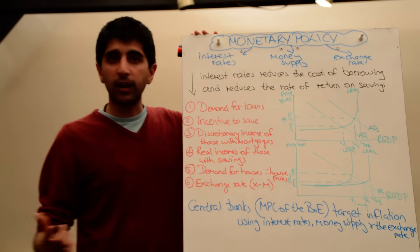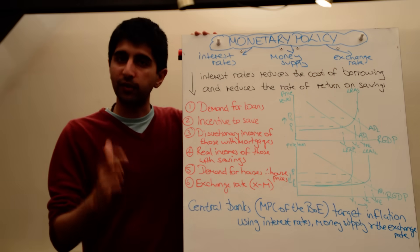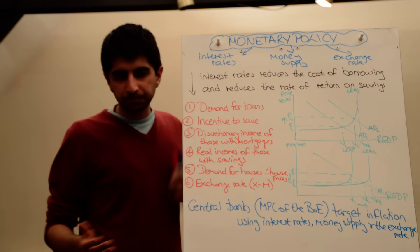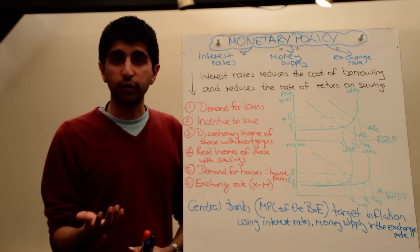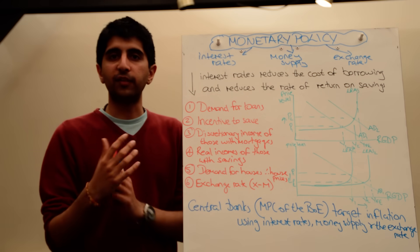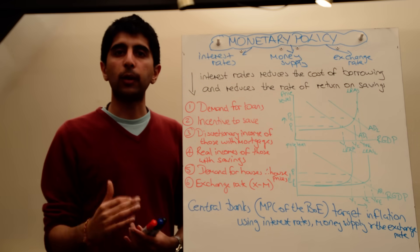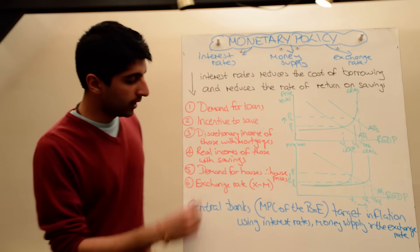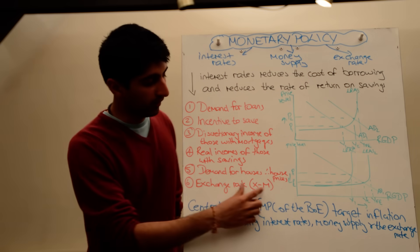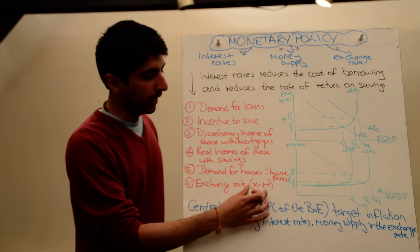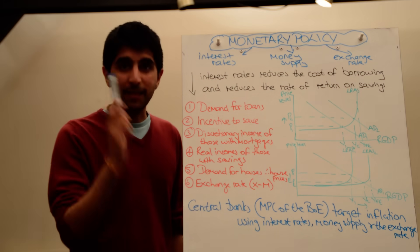Interest rates will also affect the exchange rate. Whatever happens to interest rates, the same will happen to the exchange rate — if interest rates fall, the exchange rate is also going to fall. The simple reason is hot money flows: hot money will leave the economy, so the value of the pound will depreciate and the supply of the pound increases. When the exchange rate changes, trade performance will also improve if the exchange rate weakens — net exports will increase, therefore increasing aggregate demand. Watch the video on exchange rate impacts to fully understand.